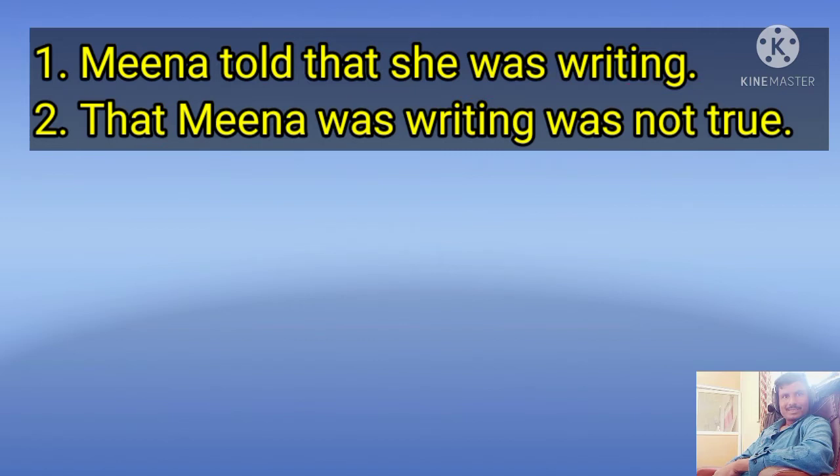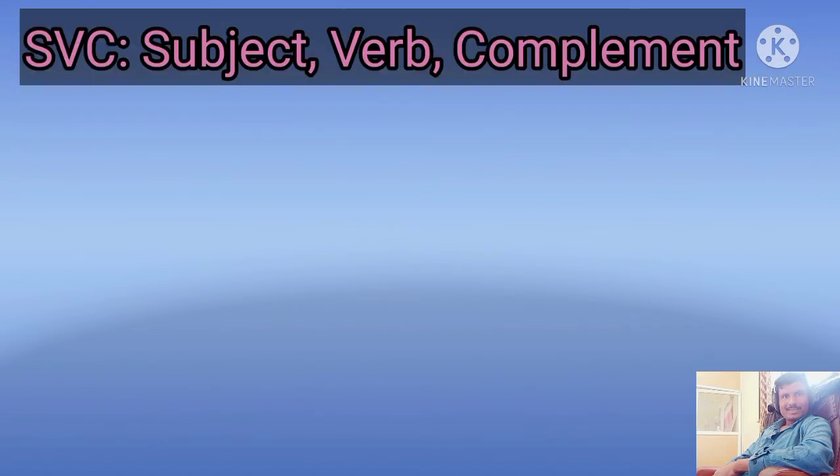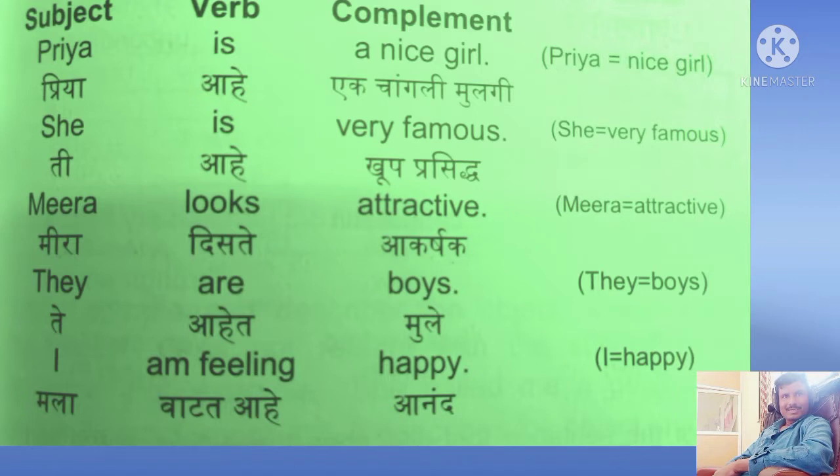Let us move on to the next basic clause type, S-V-C, i.e. subject plus verb plus complement. A noun phrase or an adjective phrase can function as the complement in the sentence. They can either function as the subject complement or the object complement. Have a look at these sentences and try to understand the pattern: subject, verb, and complement.